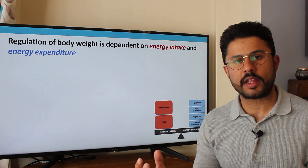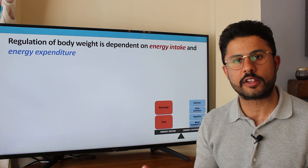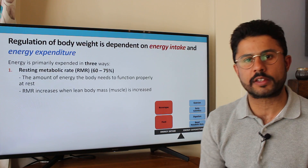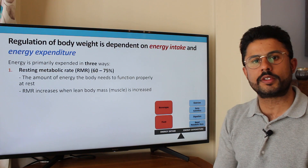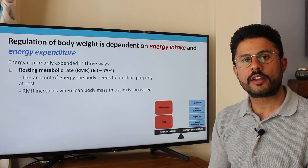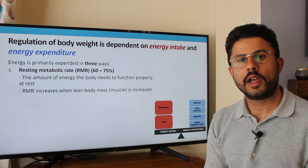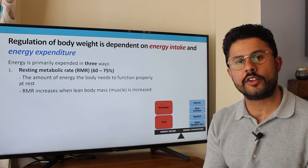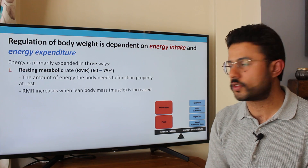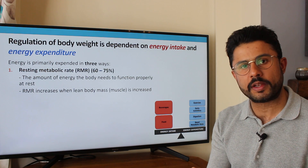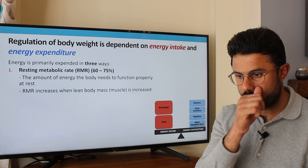In our body there are three main ways that energy is actually expended. The first is the resting metabolic rate, which accounts for about 60 to 75 percent of our energy expenditure. Whilst you're sitting down watching this video, your body is still consuming energy to maintain your basic cellular functions — that is your resting metabolic rate.